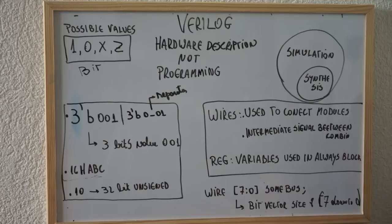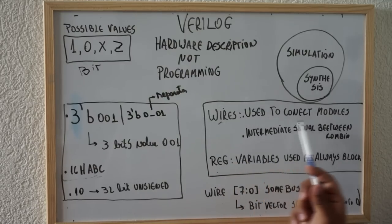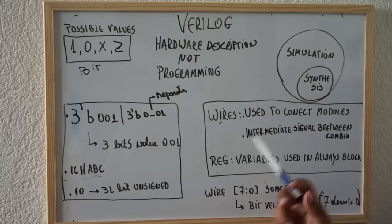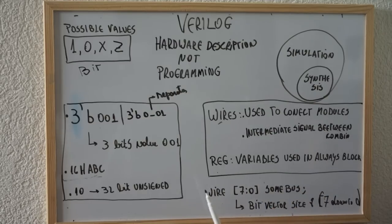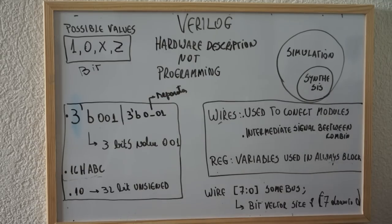You have two variable types, two signal types in Verilog: wires and reg. Wires are just used to connect modules or intermediate signals between combinational circuits. As the name says, just a wire. Reg variables are going to be used in always blocks. We are going to see this in the future and show the difference between wire and reg — when you use a reg and when you use a wire.